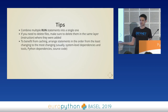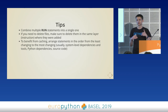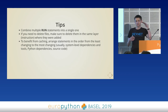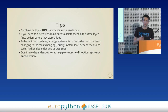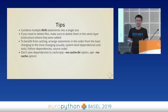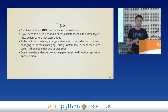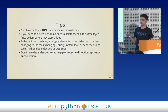The key takeaways for layer caching are: combine multiple RUN statements into a single one so they form the same layer; if you need to delete files, do it in the same layer where they were added; order your statements from least-changing to most-changing to benefit from caching — typically system-level dependencies, then Python dependencies, then source code. Also, don't save anything to cache: use pip's --no-cache-dir flag, and APK's --no-cache option.